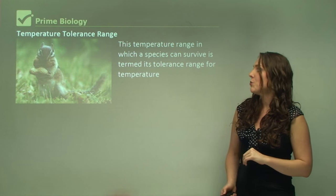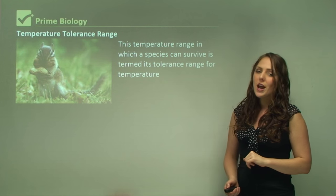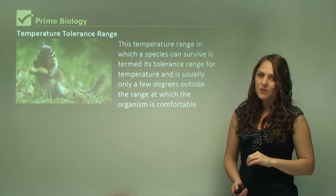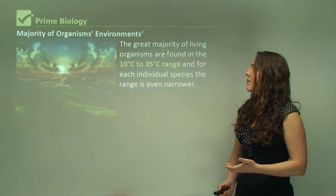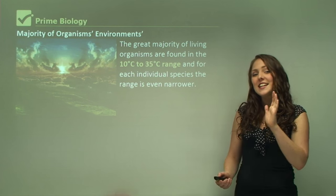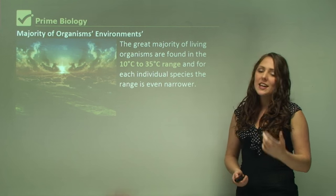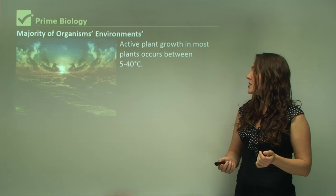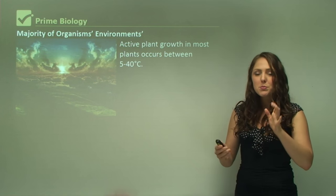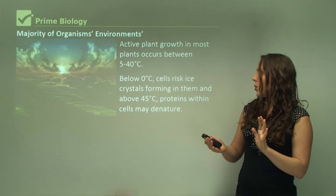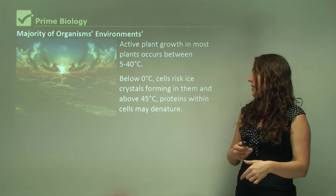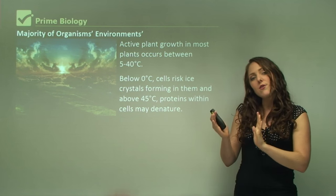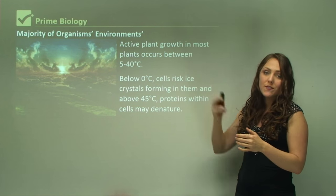The temperature range in which a species can survive is termed its tolerance range for temperature, and it is usually only a few degrees outside the range at which the organism is comfortable. The great majority of living organisms are found in the 10°C to 35°C range, and for each individual species the range is even narrower. Active plant growth in most plants occurs between 5°C and 40°C — below zero degrees, cells risk ice crystals forming, and above 45°C proteins within cells may denature. Many plants may only actively grow between 15°C and 35°C even though they can survive between 5°C and 40°C.